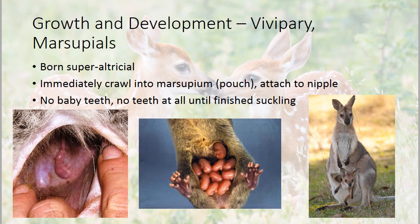The growth and development of viviparous mammals — specifically marsupials — is a little different from most mammals. Marsupials are born super altricial: really tiny, really undeveloped, hairless, eyes closed. Most of their body is comprised of their mouth parts so they can latch on. They immediately crawl into the marsupium (the pouch) and attach to the nipple. They have no teeth at all until finished suckling.